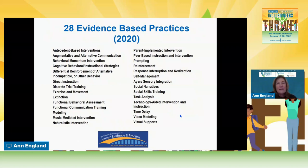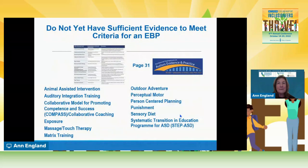Not only have they been researched by one researcher, but multiple researchers have done the exact same research and come up with the same finding—meaning it's been replicated. It takes a lot of work and time to become an evidence-based practice. I can't list everything that doesn't have sufficient evidence, but there are some popular ones out there for individuals with autism—you can find them on page 31—that do not have evidence to meet criteria as an evidence-based practice. You may see some on there that you are familiar with, so I do hope you have an aha.